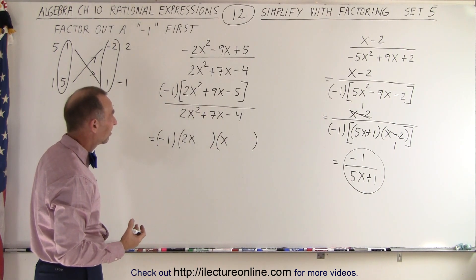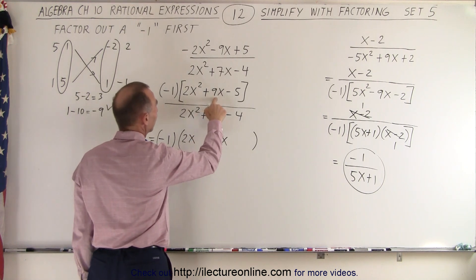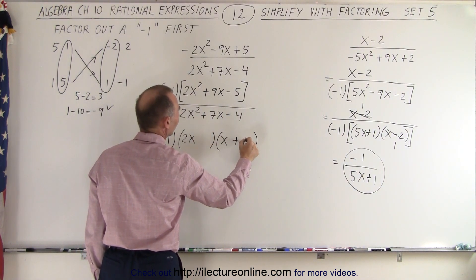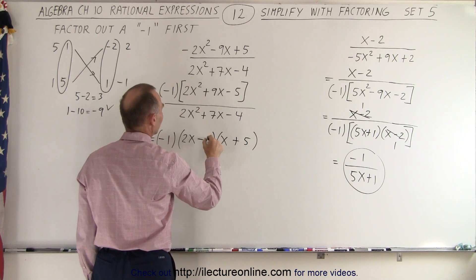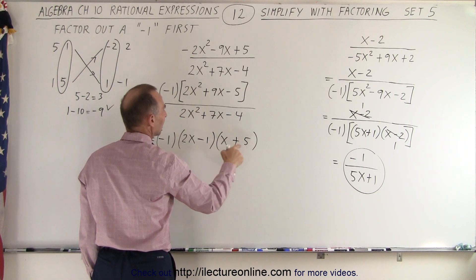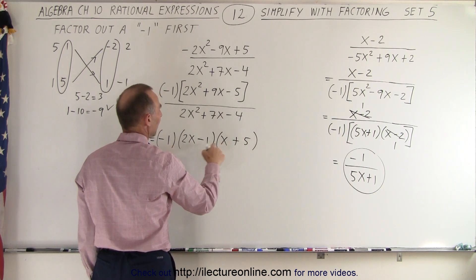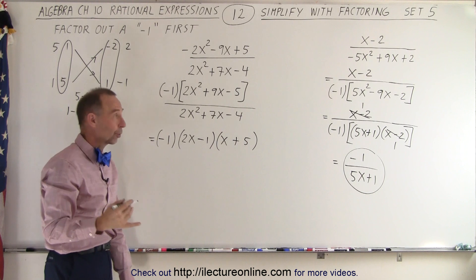We could use FOIL or we could guess. We need a big positive middle term. So how about 2x and a positive 5 and an x and a negative 1? Because negative 1 times a positive 5 gives us a negative 5. And 2 times 5 is 10, minus 1 is 9. So that seems to work.